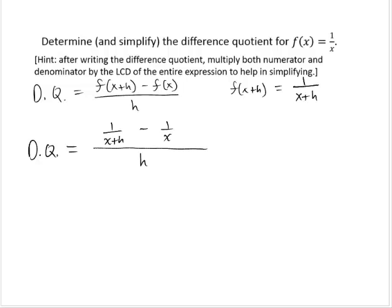The hint says: after writing the difference quotient, multiply both numerator and denominator by the least common denominator of the entire expression. I see two denominators here — x plus h and x. They have no common factors, so the LCD is x times x plus h.